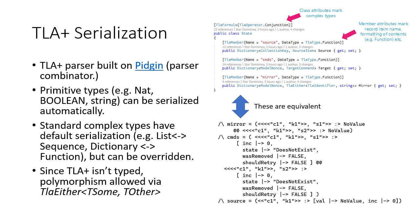For the implementation of Kayfabe, for TLA+ serialization I built a parser using the Pidgin parser combinator. Primitive types such as nat, bool, or string can be serialized automatically. There are several ways to serialize complex types, so I have a default serialization but you can override this - for instance, alternating between functions and records. Since TLA+ isn't typed, we also want some polymorphism, which we accomplish with something like TLA Either, which allows you to have, for instance, a string or a model value. At the top we have the C# implementation using the TLA serializer, and this corresponds to the TLA+ expression shown below.